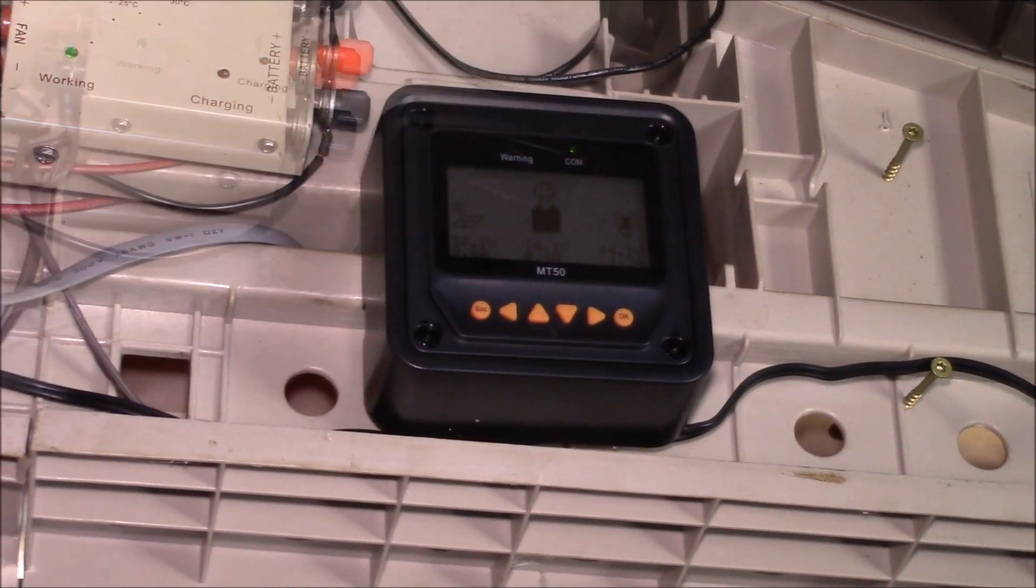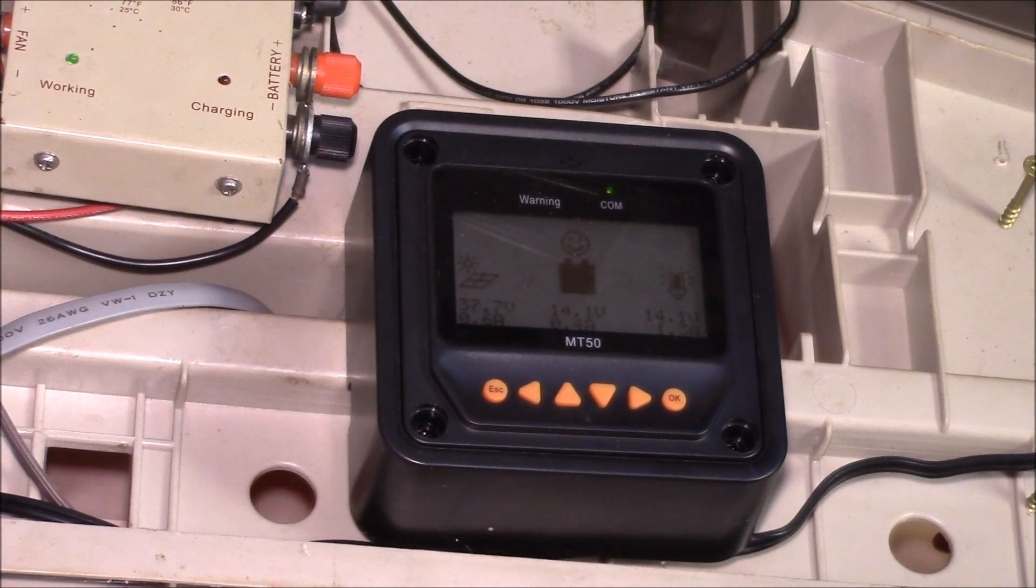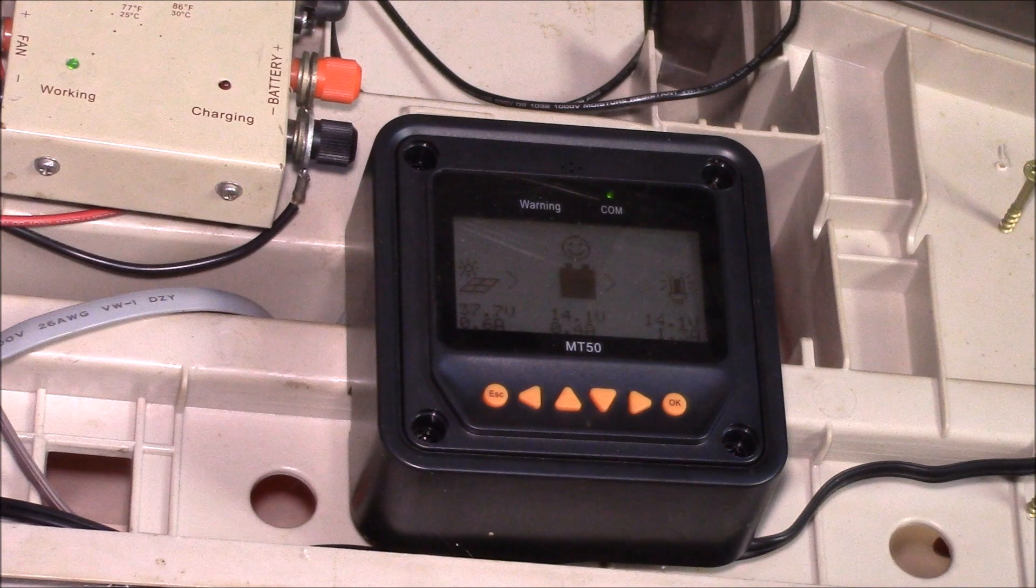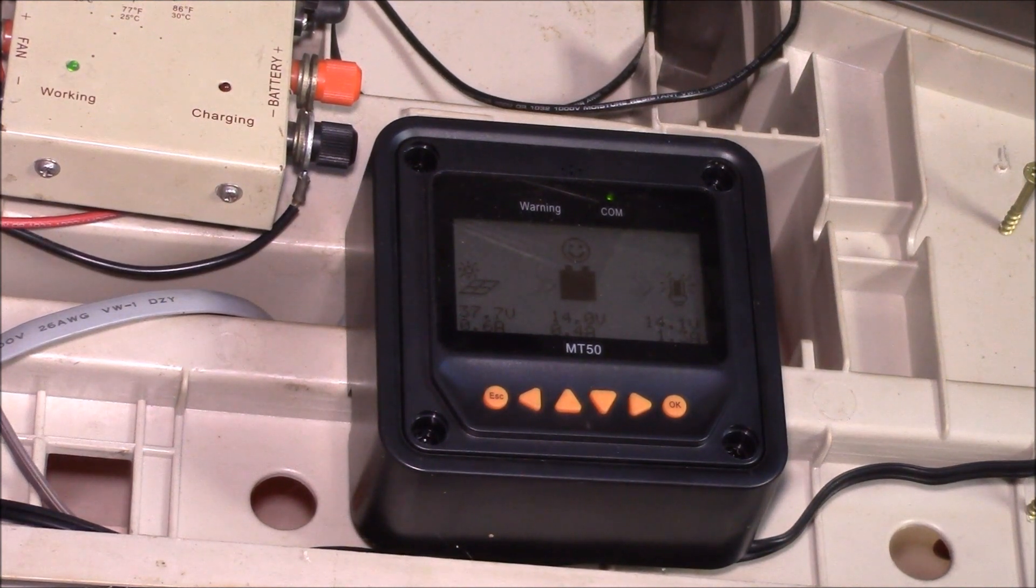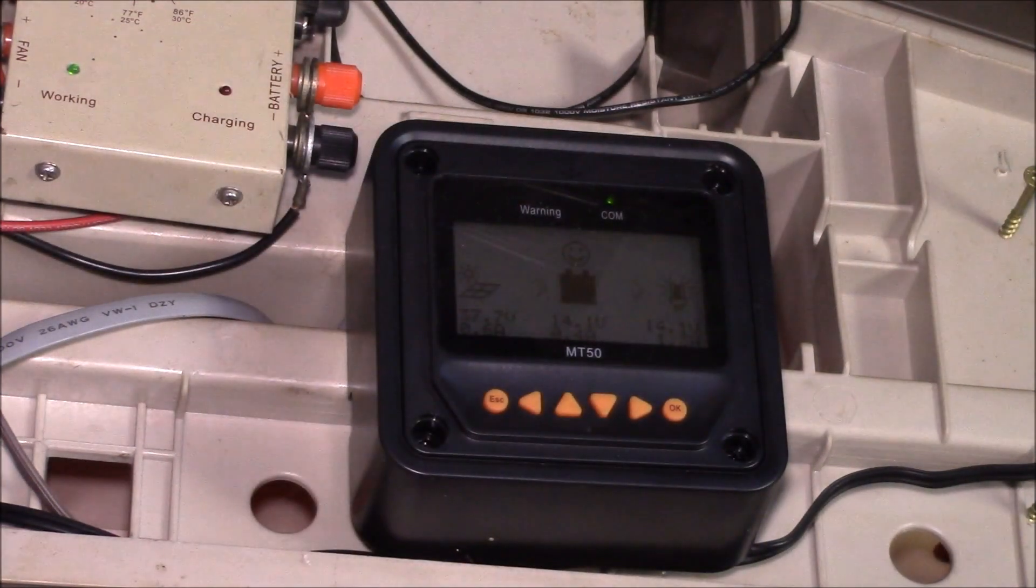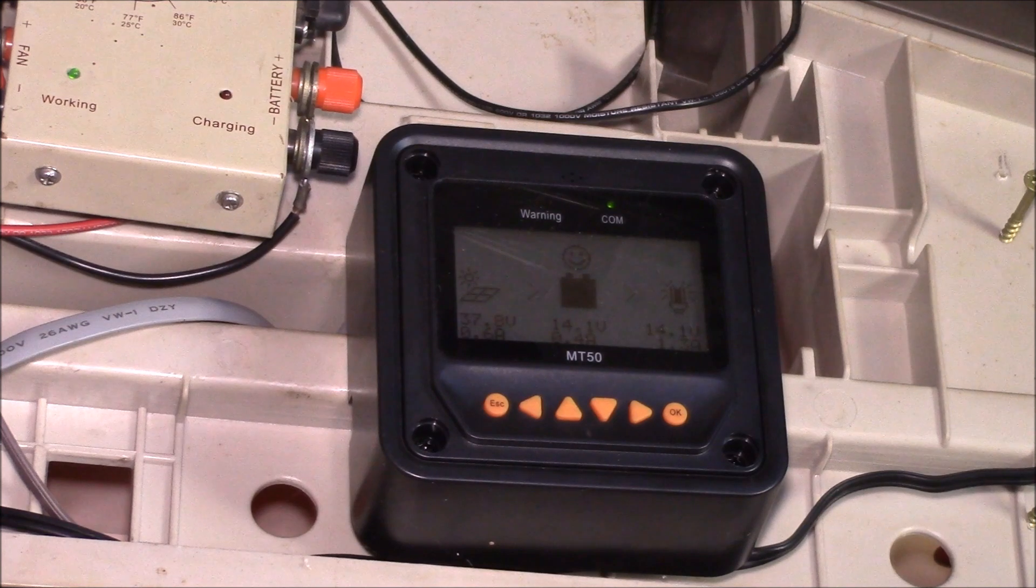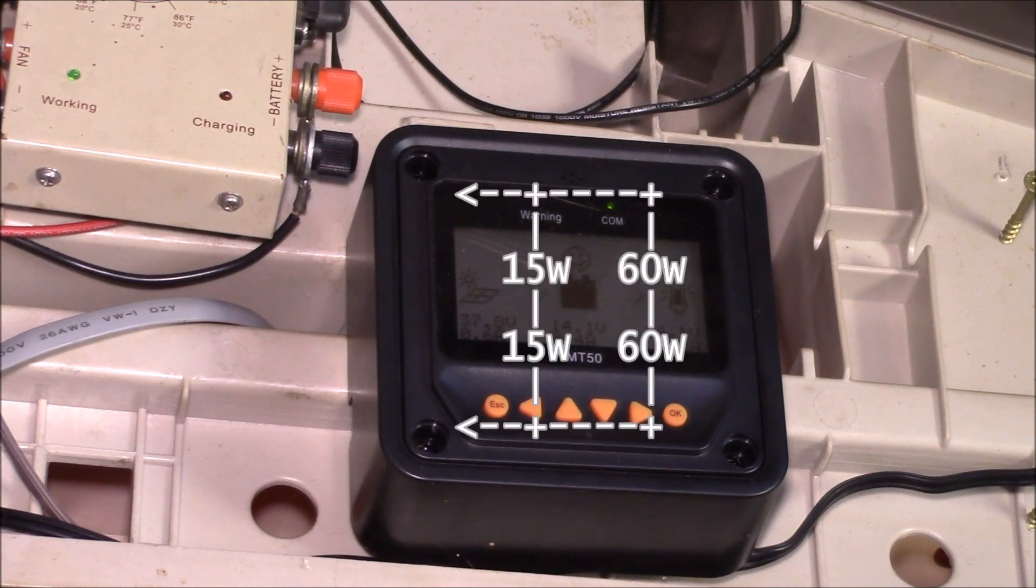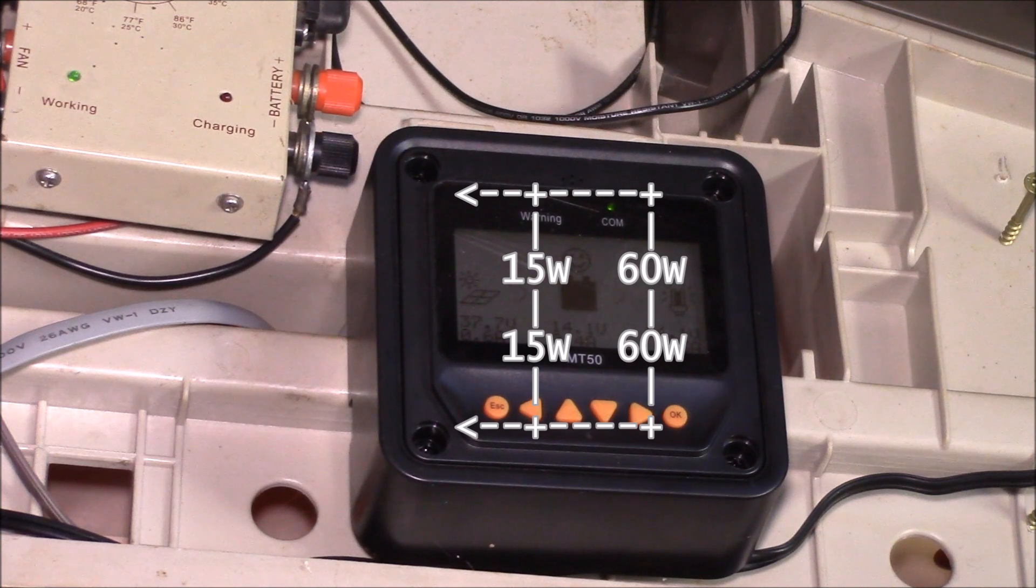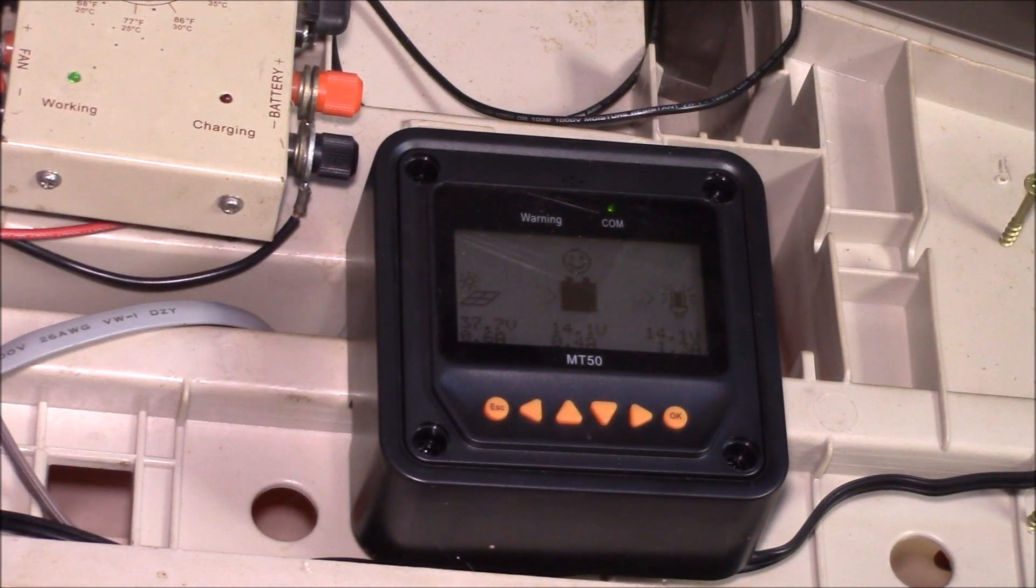I've got this MT50 remote display plugged into the charge controller and I'm using this to charge the two batteries I have in here. As a quick summary, up on the roof of the shed I've got a pair of 15 watt amorphous panels and then I have a pair of 60 watt polycrystalline panels that are in series, and then those two are in parallel.